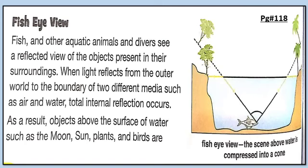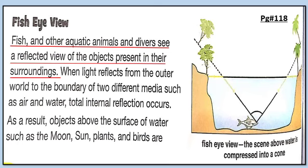On page number 118 the topic is fish eye view. When a fish looks upward at its surroundings, it sees its area in a cone form. Fish and other aquatic animals and divers see a reflected view of objects present in their surroundings. When light reflects from the outer world to the boundary of two different media such as air and water, total internal reflection occurs.